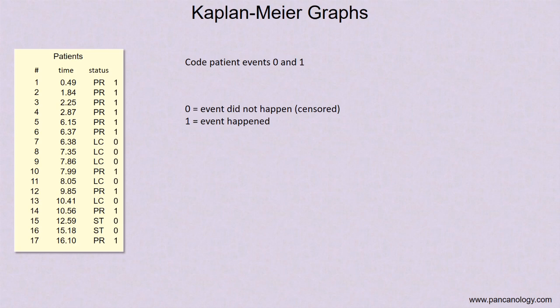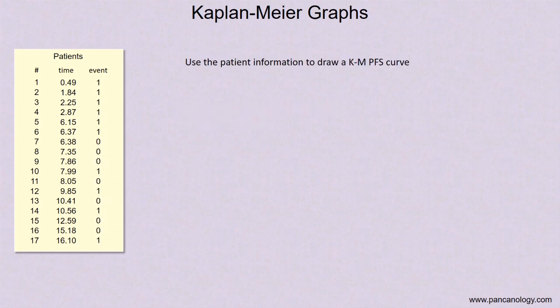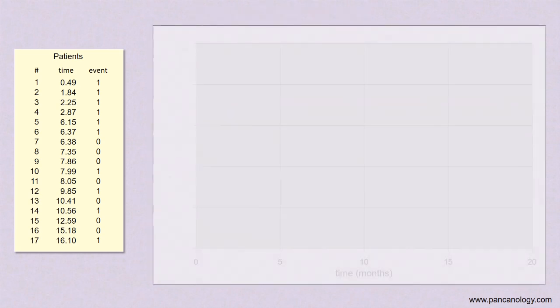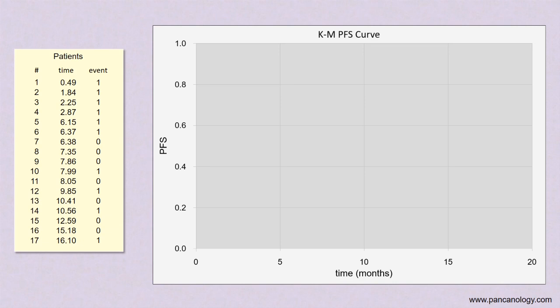In Kaplan-Meier terminology, these patients are called censored. Now we have all the data that we need to draw the Kaplan-Meier curve. The Kaplan-Meier curve has time on the x-axis and the fraction of patients without the event on the y-axis. In our example, this means the fraction of patients in any given time that did not have tumor growth. You might also see the y-axis presented as a percentage of patients from 0 to 100%.